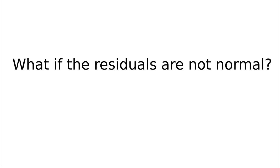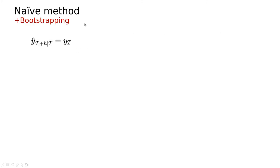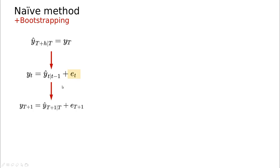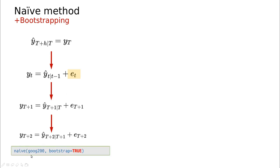What if the residuals are not normal? Then we can't use the trick of multiplying by the standard deviation of residuals, and we need something more advanced called bootstrapping. The idea is to apply the method to predict into the future one step at a time — for the naive method, the next value equals the previous value, and we use the residual from that step, projecting forward and comparing the prediction from the previous step, then moving further into the future, plugging in past errors to predict the future.